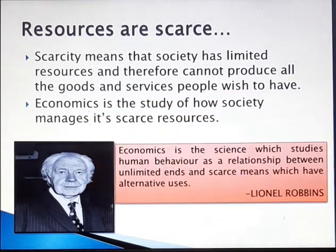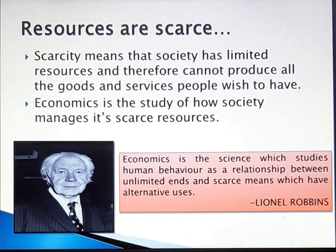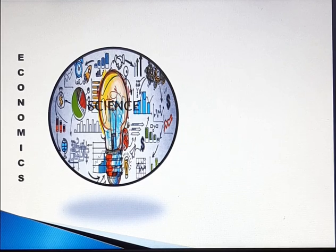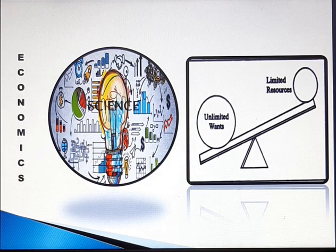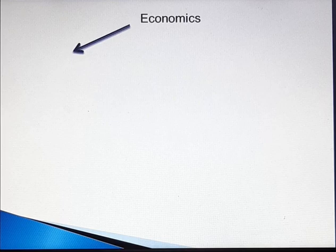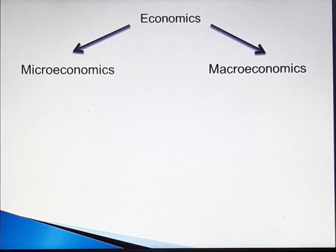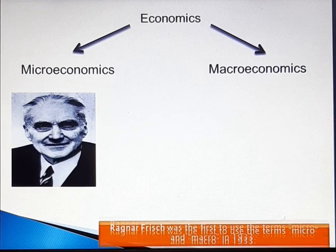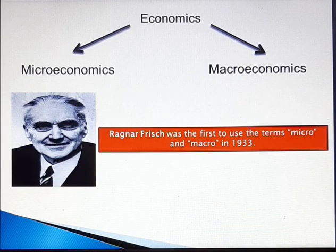According to Lionel Robbins, economics is a science which studies human behavior as a relationship between unlimited wants and limited resources which have alternative uses. The subject matter of economics has been divided into two parts: microeconomics and macroeconomics. Ragnar Frisch was the first to use the terms micro and macro in 1933.